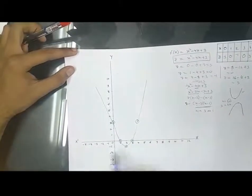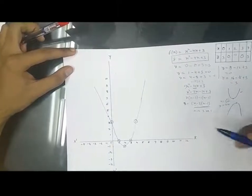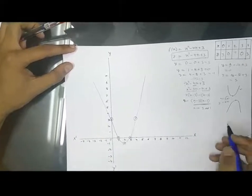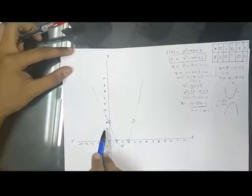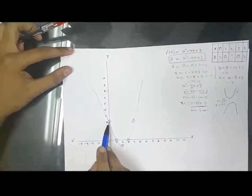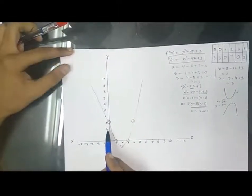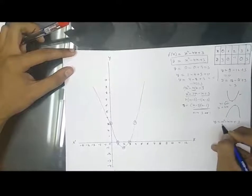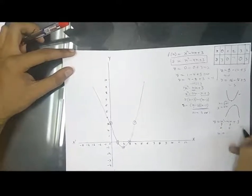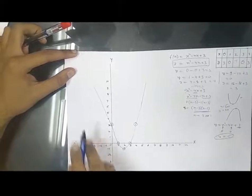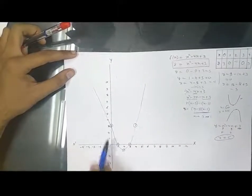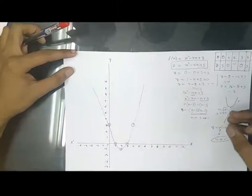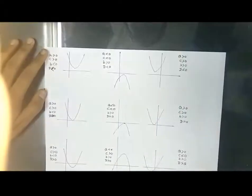We can find the roots by factorizing the polynomial or by other methods. On the y-axis, the graph cuts where x = 0. Substituting x = 0 into y = x² - 4x + 3 gives y = 3, which is the constant term. So the graph always cuts the y-axis at a point equal to the constant term — here, 3.